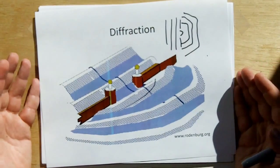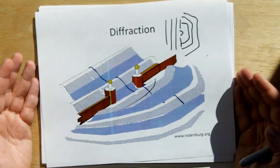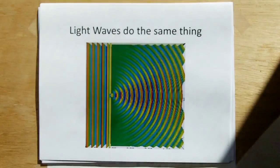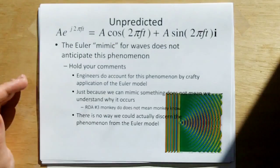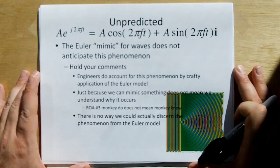So for water waves to implement diffraction, it's because the waves, the medium which carries the waves, can flow. We know that light waves do the same thing. Unfortunately, the model that we use, the model that works the best for us, which is Euler's model, is a mimic for waves that does not anticipate this phenomenon.